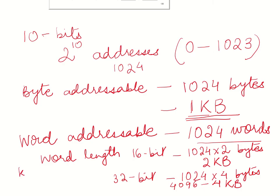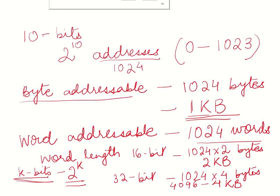To generalize: k bits of addresses give 2 to the power of k addresses. The size of the memory will then depend on whether it is byte addressable or word addressable, and if it is word addressable, what the word length is. Based on all this information, you can determine the maximum memory size that the processor will be able to access.